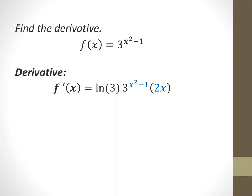For this one, we take — because we have a number as the base and a function of x as the exponent, like f(x) = a raised to f(x) — we take the natural log of the base, keep the function exactly the way it is, and then chain rule out the derivative of the exponent.